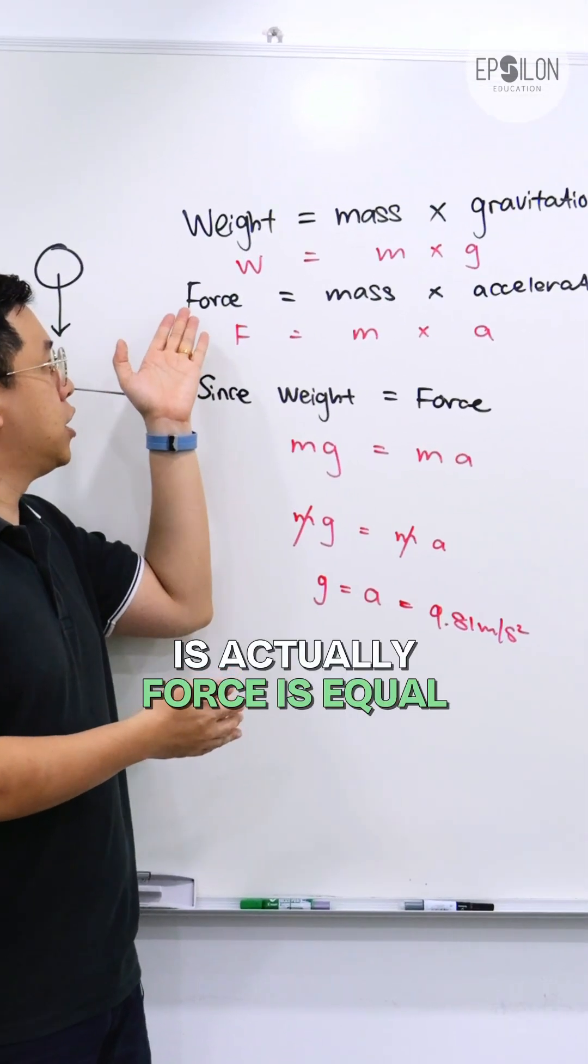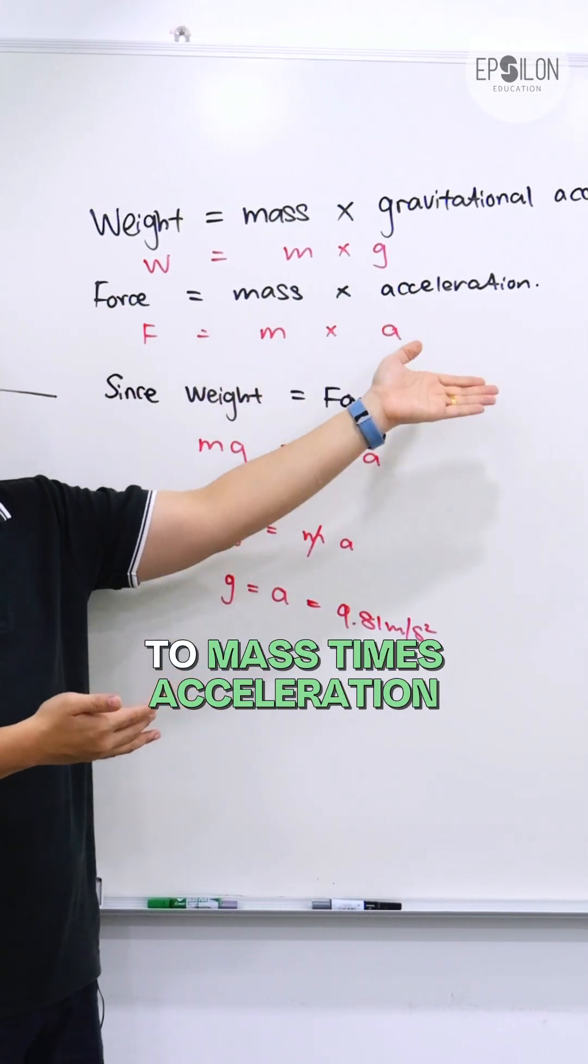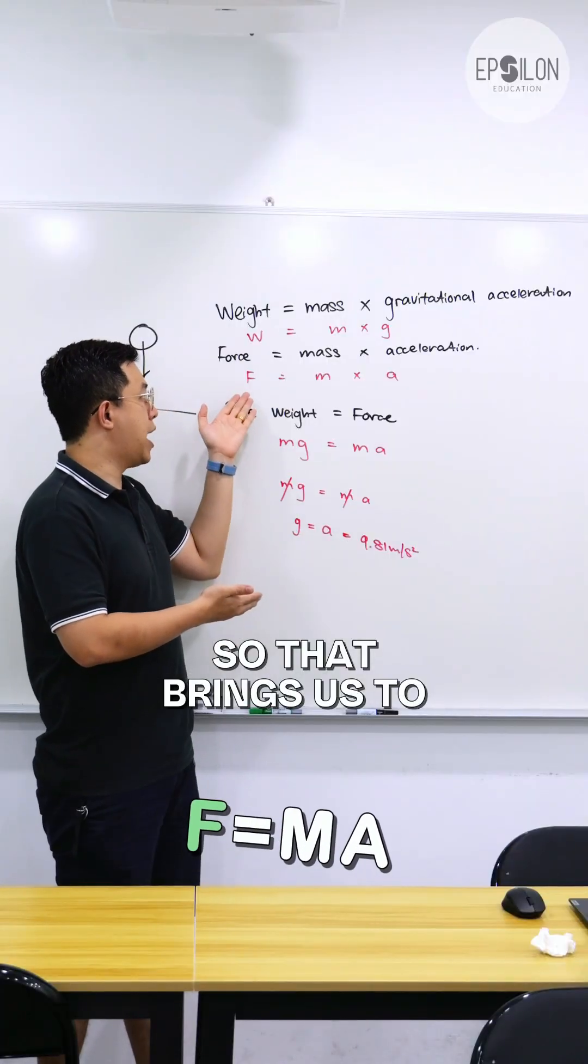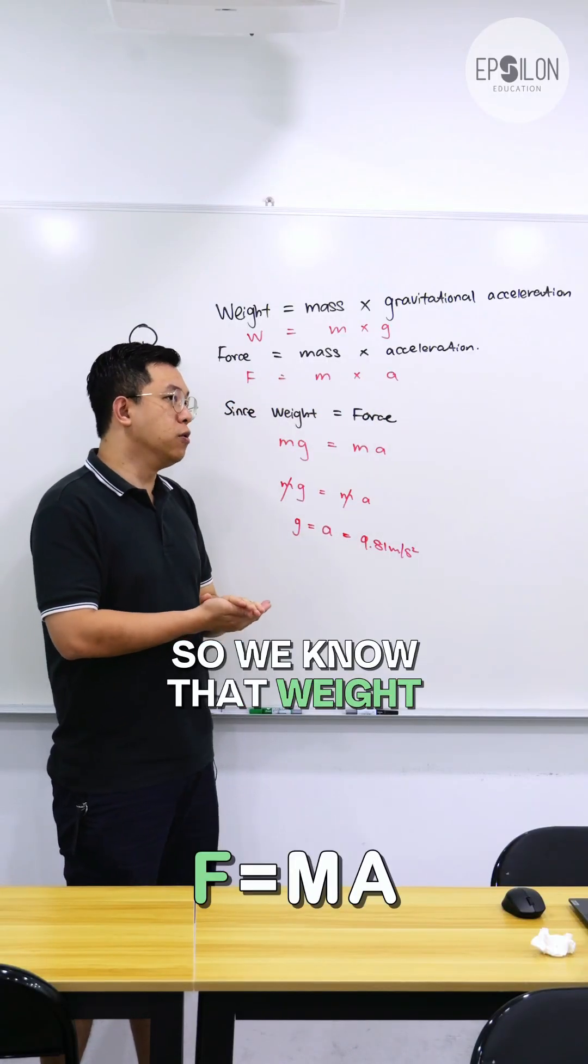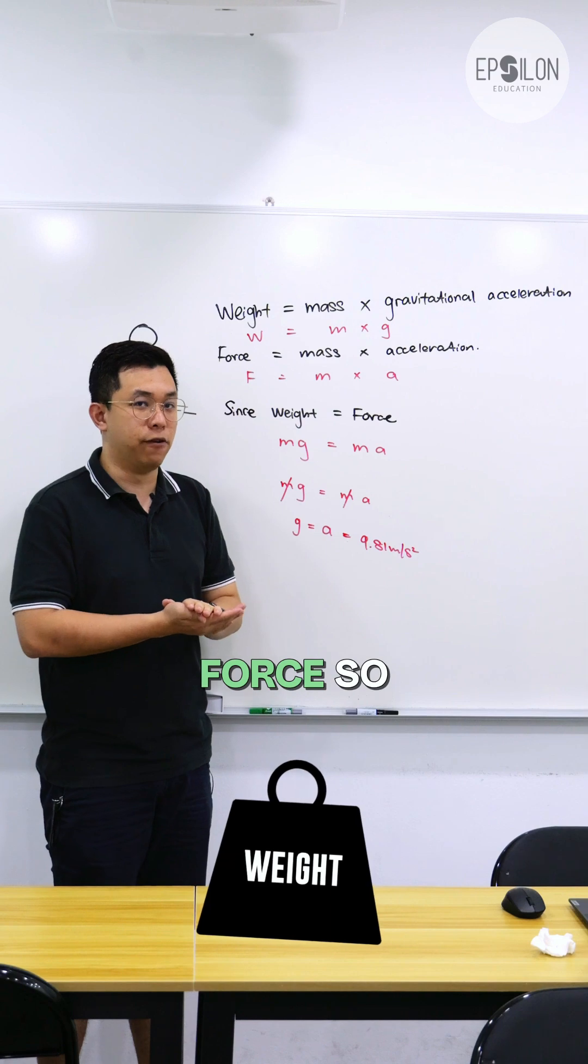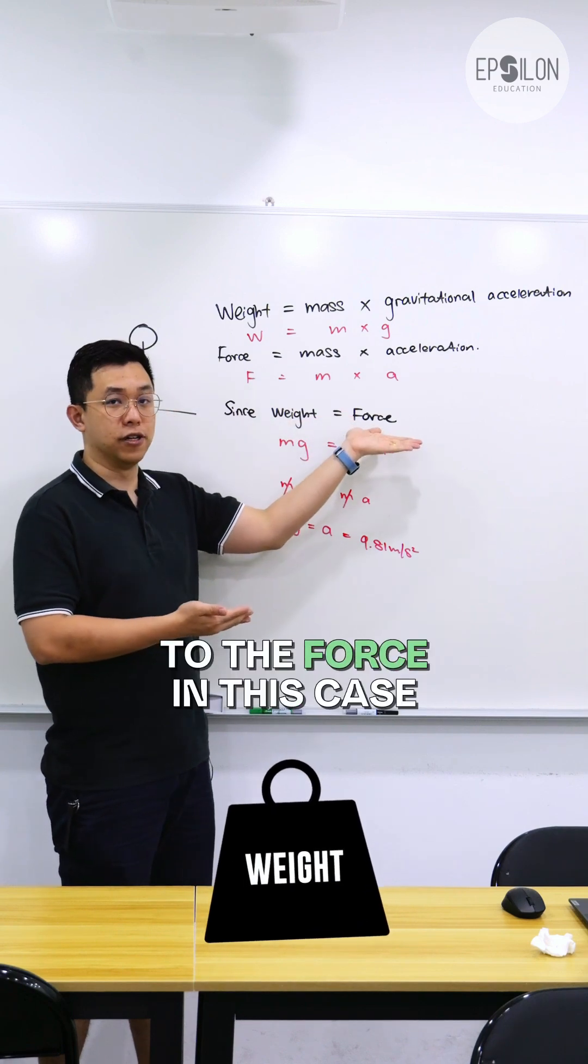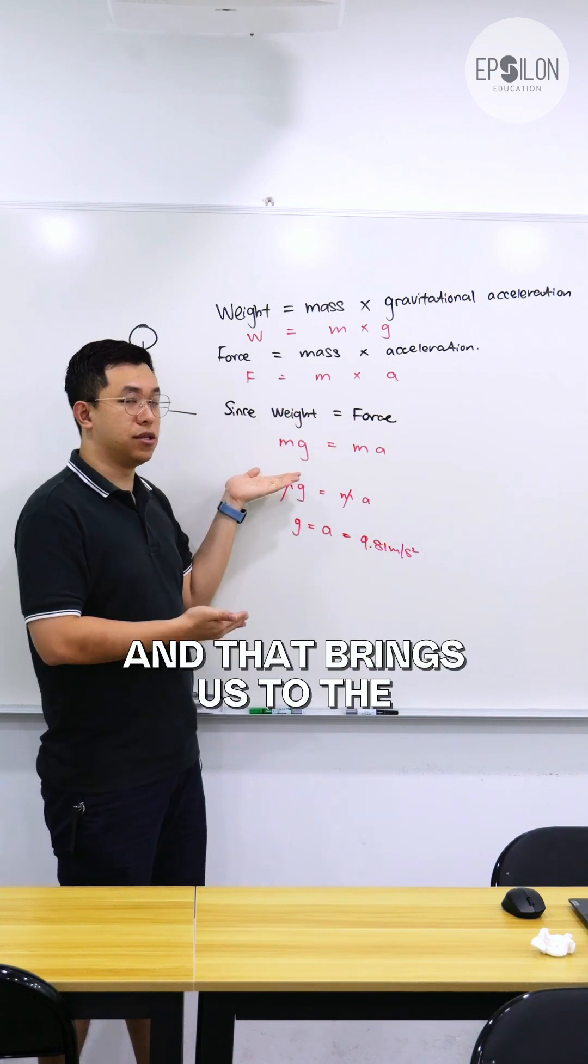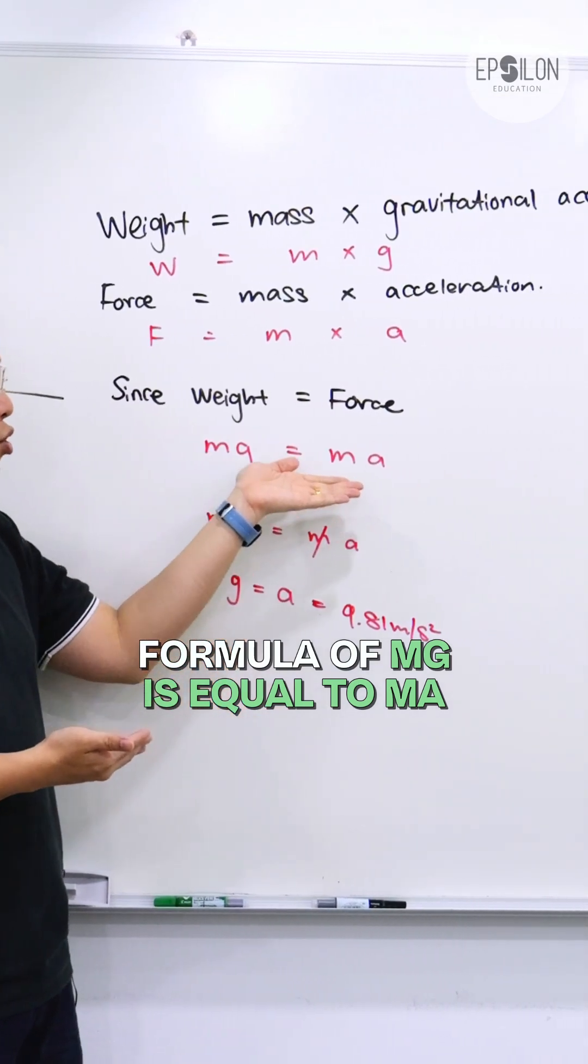Second formula that we learn is force is equal to mass times acceleration. So that brings us to F equals MA. We know that weight is actually a gravitational force, so weight is equal to the force in this case. And that brings us to the formula MG equals MA.